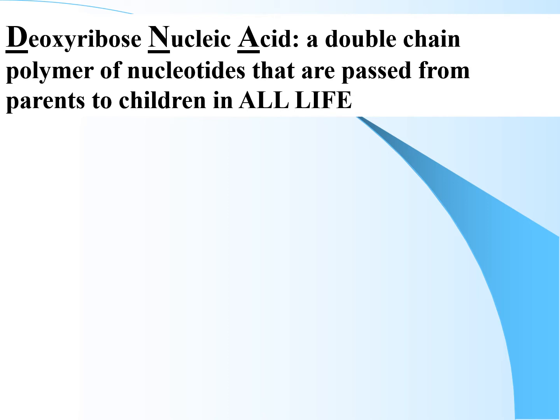So let's talk about what DNA actually is. DNA stands for deoxyribose nucleic acid. Deoxyribose is a sugar specific to DNA. Nucleic acids — the monomers of DNA — make this a double-chained polymer, two strands. You usually see this as the classic helical shape of nucleotides. Those are the monomers passed from parents to children in all forms of life — everything from bacteria to fungi to plants to animals. All life uses DNA. That was one of the requirements for something to be alive that we covered at the beginning of the year: it uses either DNA or RNA.